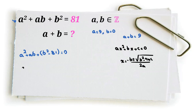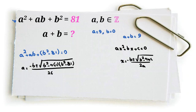Applying the formula here, a equals negative b plus or minus the square root of b squared minus 4 times 1 times (b squared minus 81), all over 2. Simplifying the discriminant: b squared minus 4b squared plus 324, which gives negative 3b squared plus 324, all over 2.